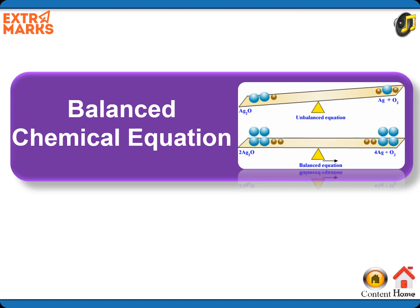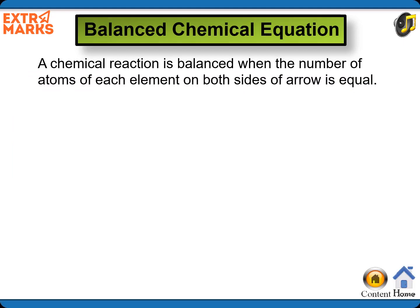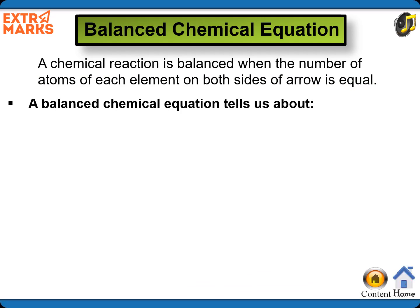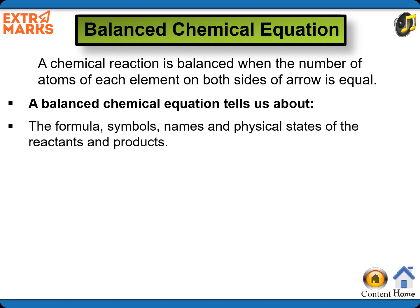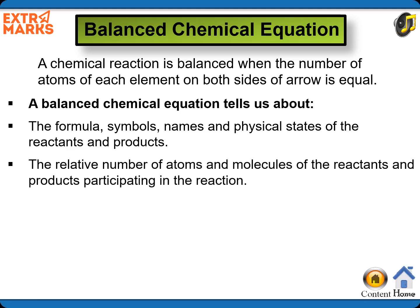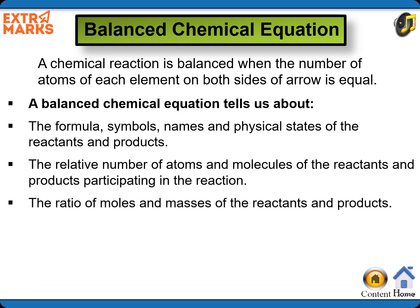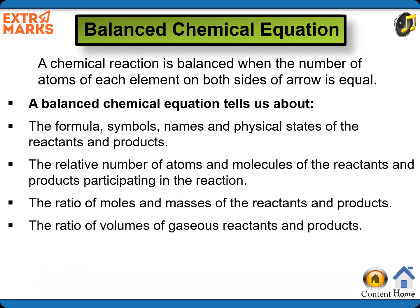Let us study about the balanced chemical equation. A chemical reaction is balanced when the number of atoms of each element on both sides of the arrow is equal. A balanced chemical equation tells us about the formula, symbols, names, and physical states of the reactants and products; the relative number of atoms and molecules of the reactants and products participating in the reaction; and the ratio of moles and masses of the reactants and products.